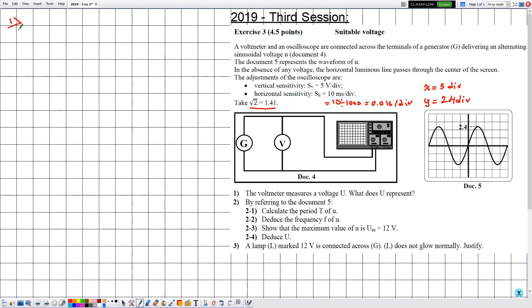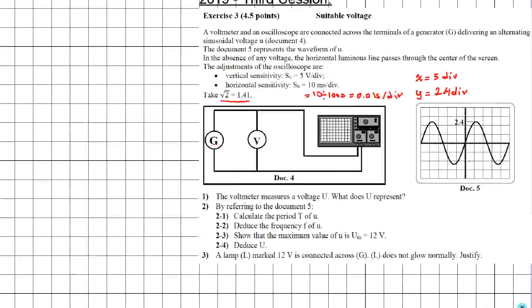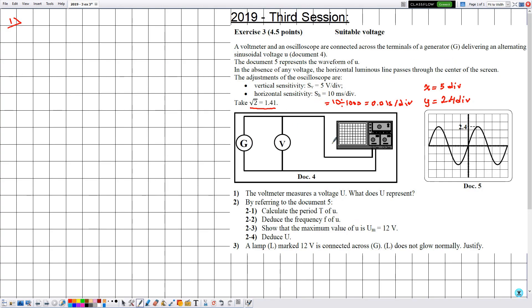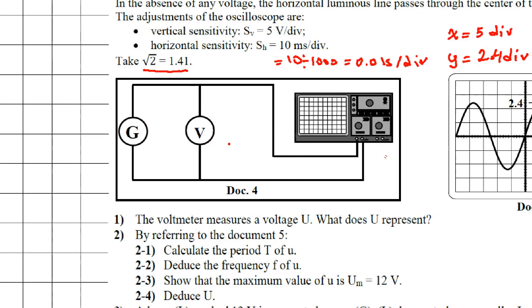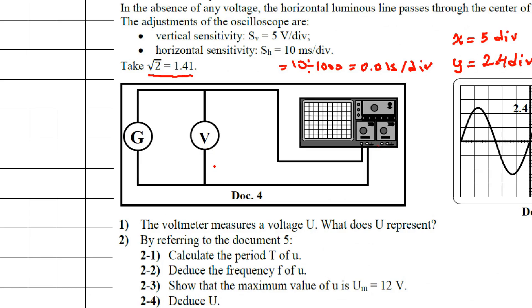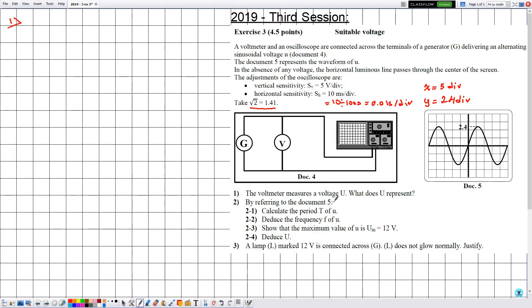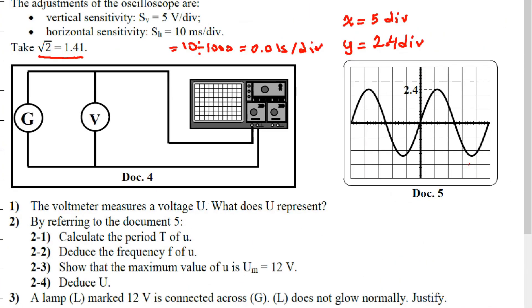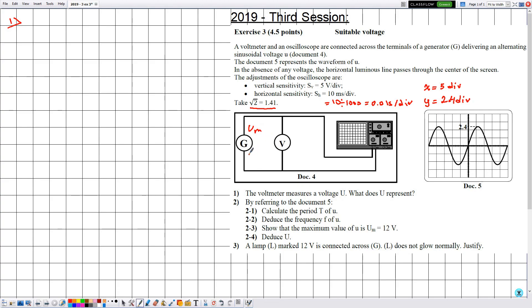Number one: the voltmeter measures a voltage U — what does U represent? The generator G delivers voltage U which is sinusoidal and displayed by the oscilloscope. The voltmeter is connected across the generator. Note that the positive terminal is not indicated on the voltmeter because we are measuring an AC voltage — it's alternately positive and negative. The generator can be characterized by U maximum and U effective. Since the voltmeter measures the voltage that makes the effect, U represents the effective voltage.